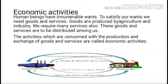Human wants are unlimited. How can we satisfy these unlimited wants through various goods and services? We get goods from agriculture and industry, and various services we get from service agencies. So, these goods and services are to be distributed among us through economic activities. The activities which are mainly concerned with production and exchange of goods and services are called economic activities. You can look at the picture where production takes place and it reaches to the consumer — this is the process of exchange, which is what is called an economic activity.